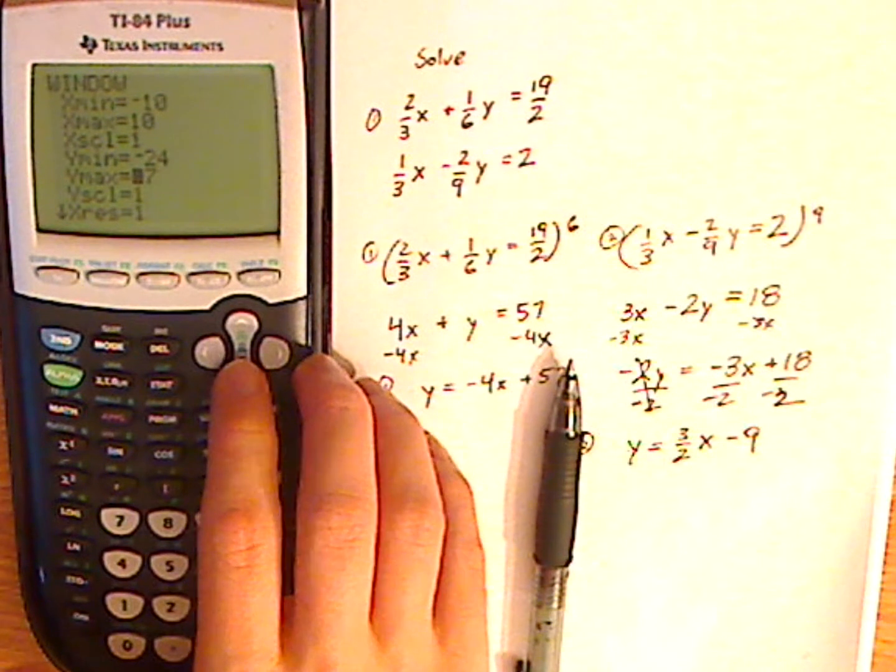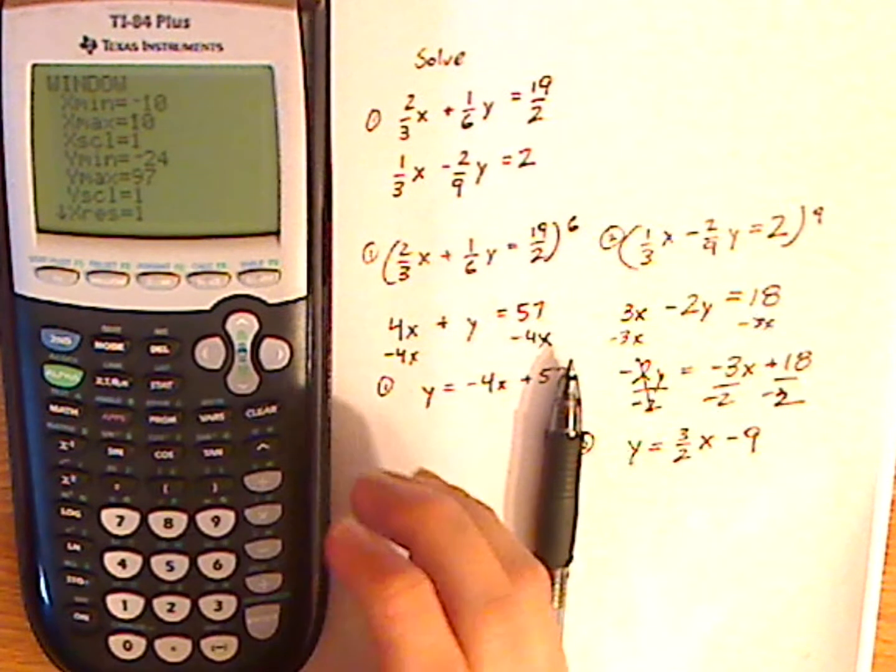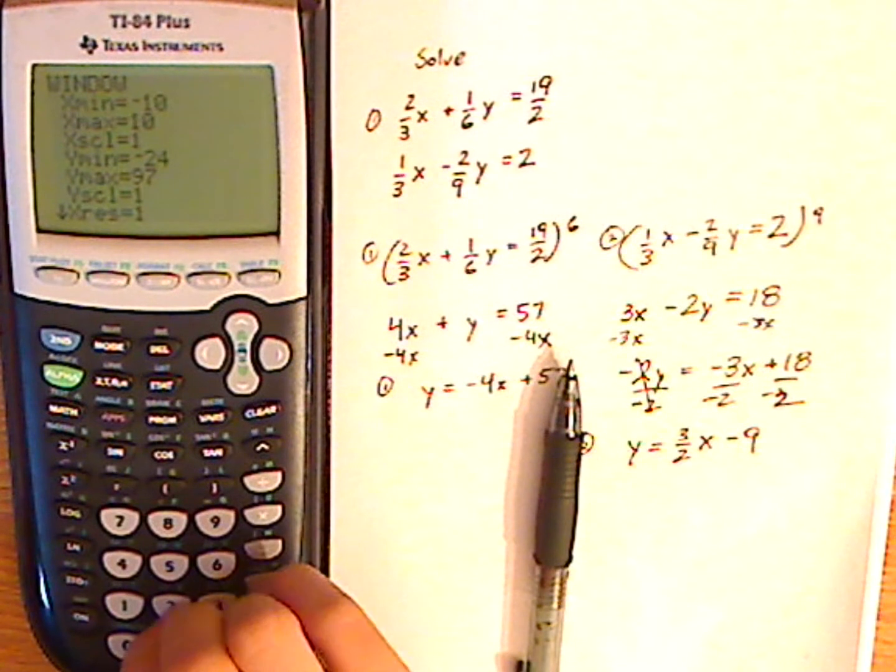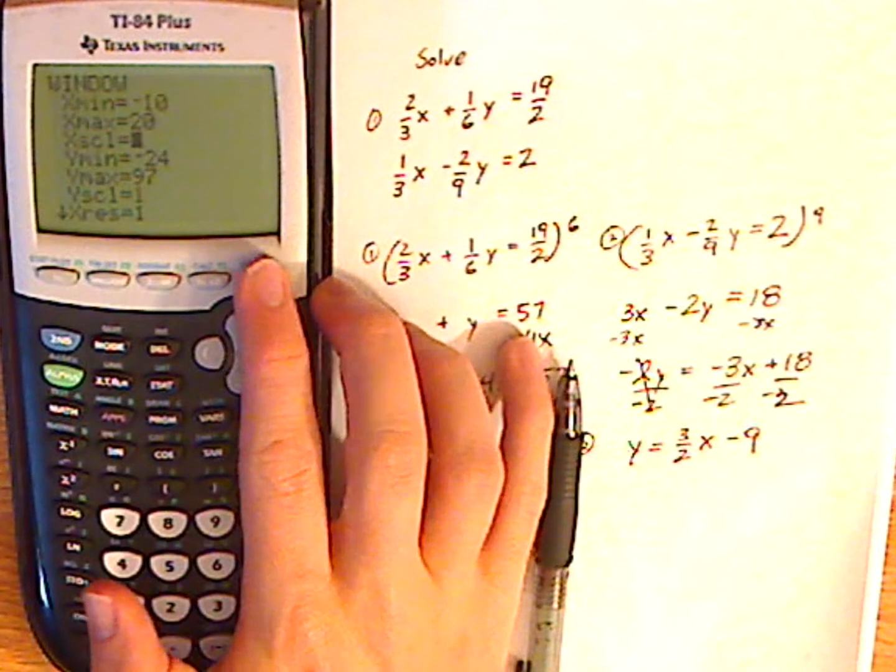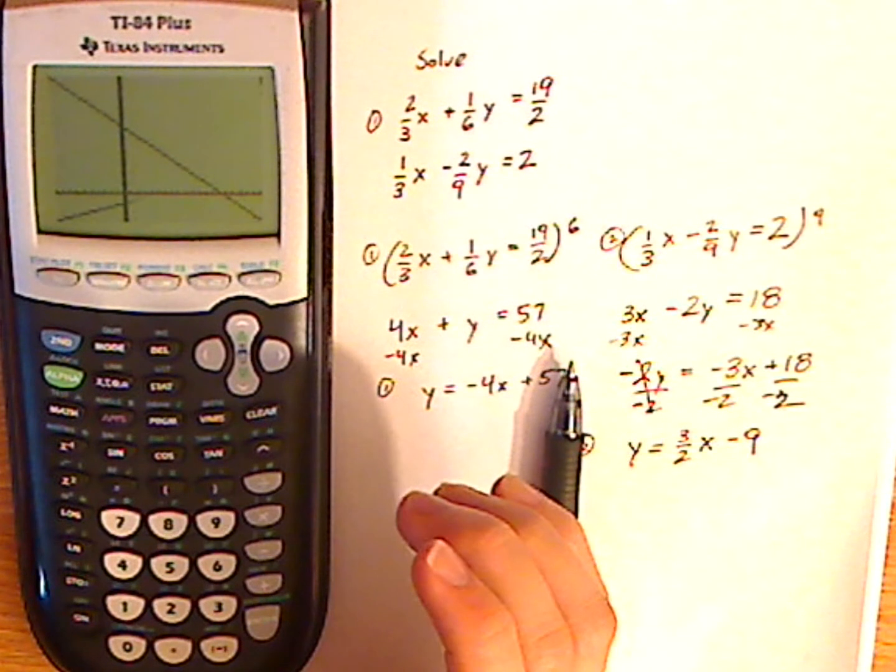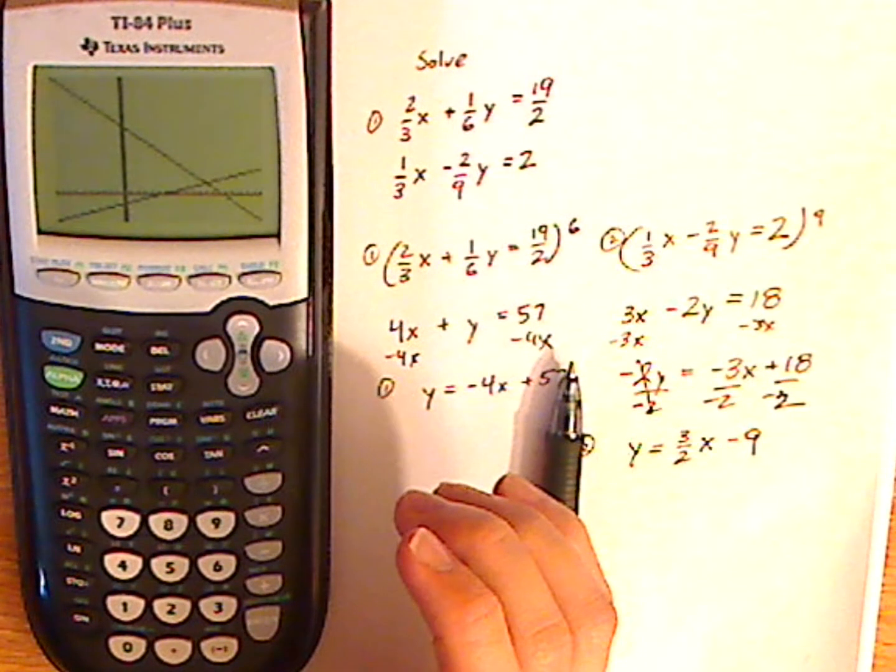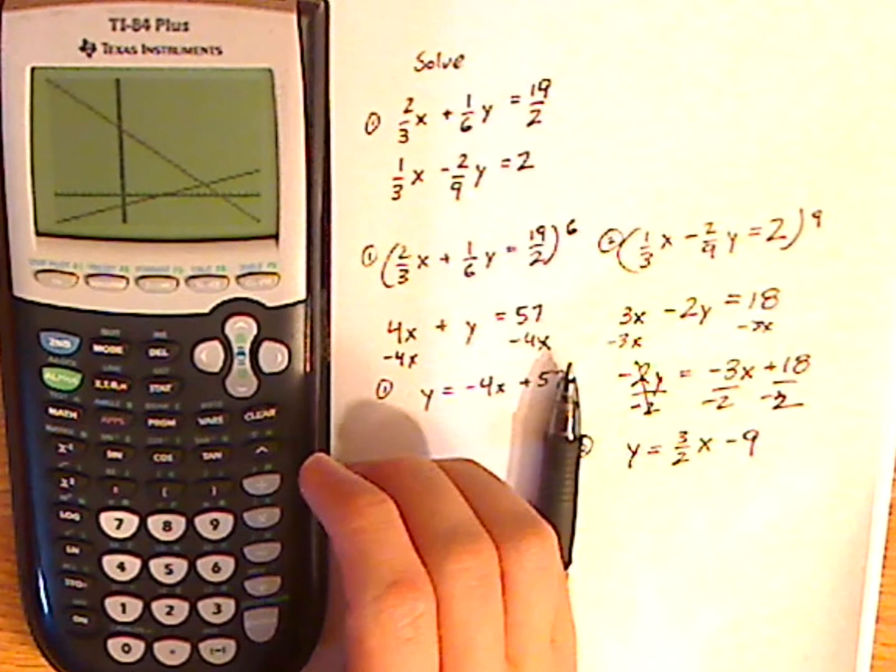So I'm going to go window, and I'm going to increase my y max, or sorry, my x. So I'm going to increase it to 20. Let's see if that works. You want to keep on going until you see the intersection on the screen.